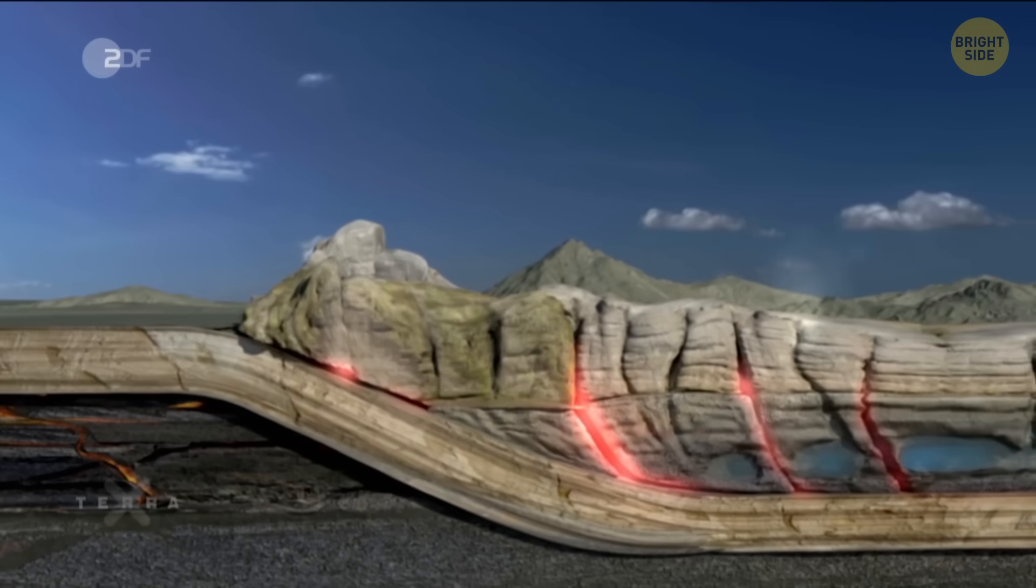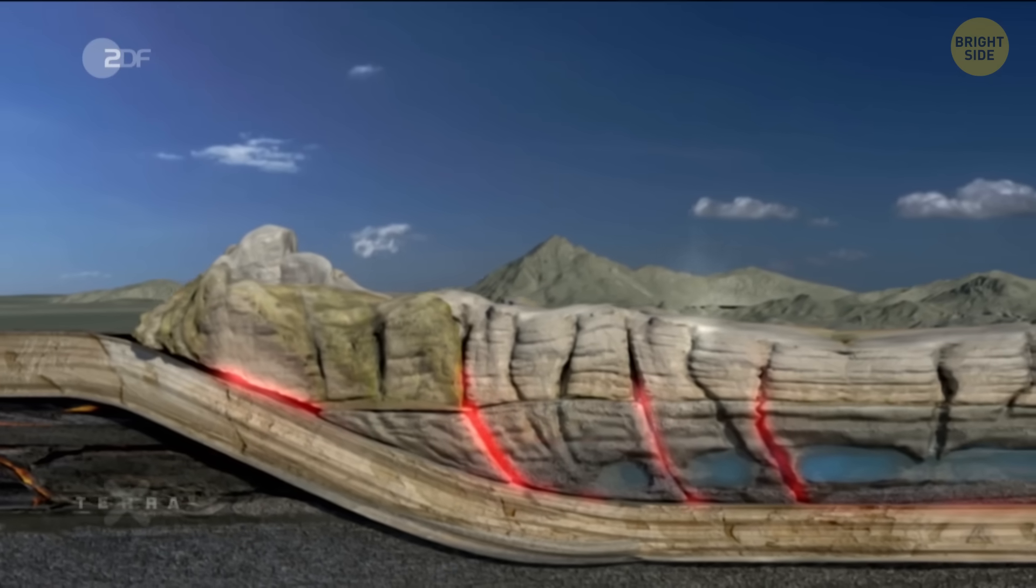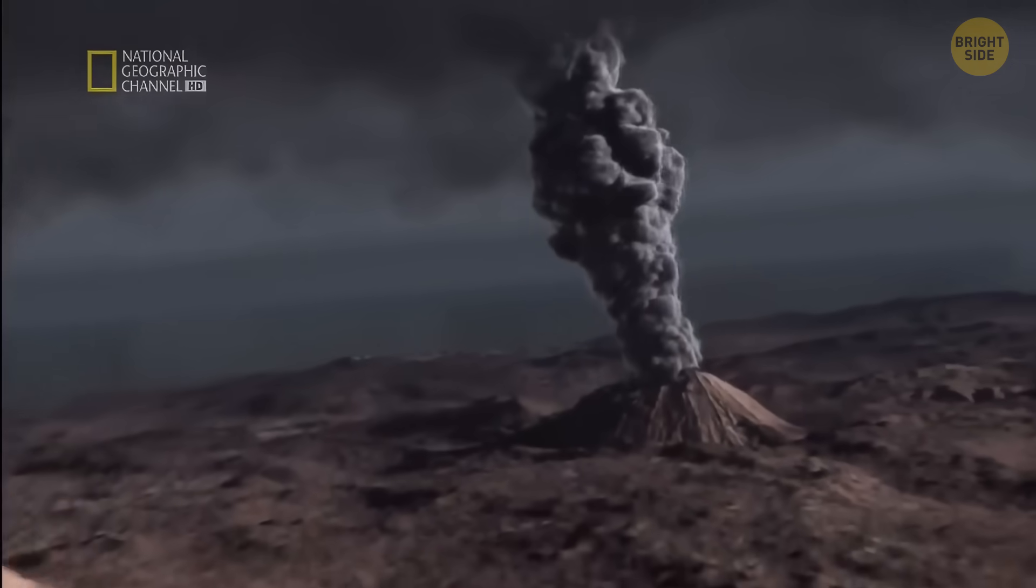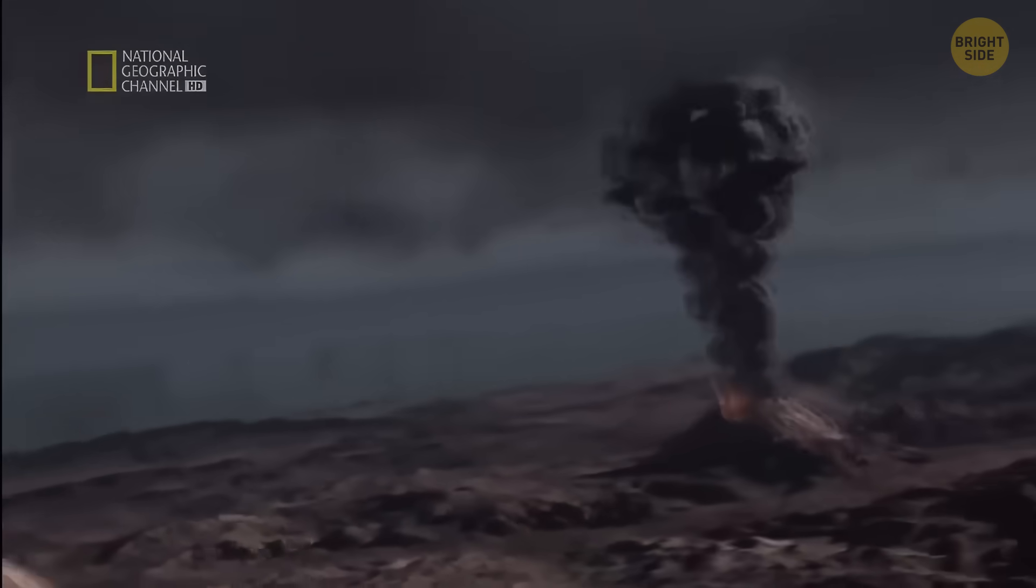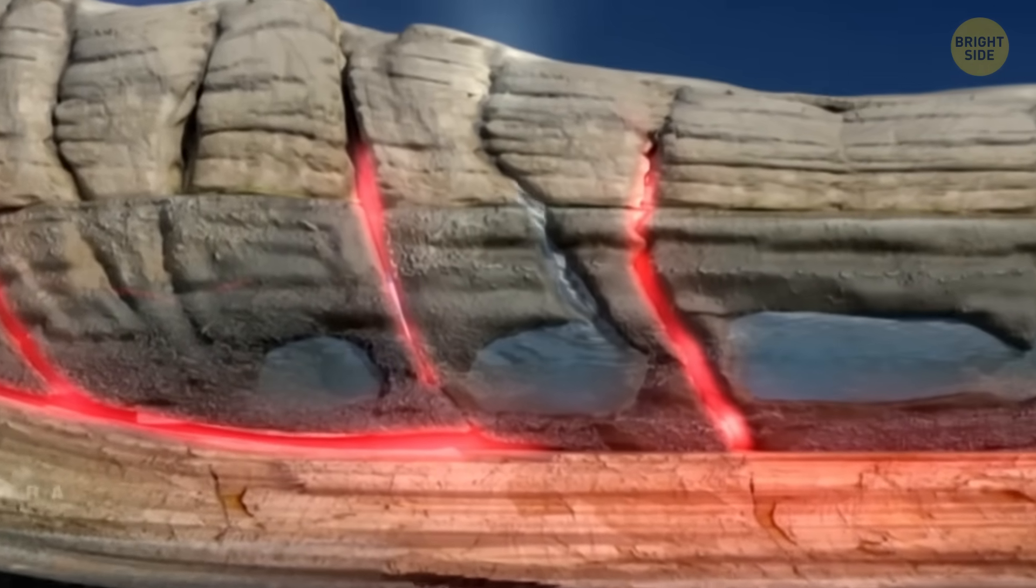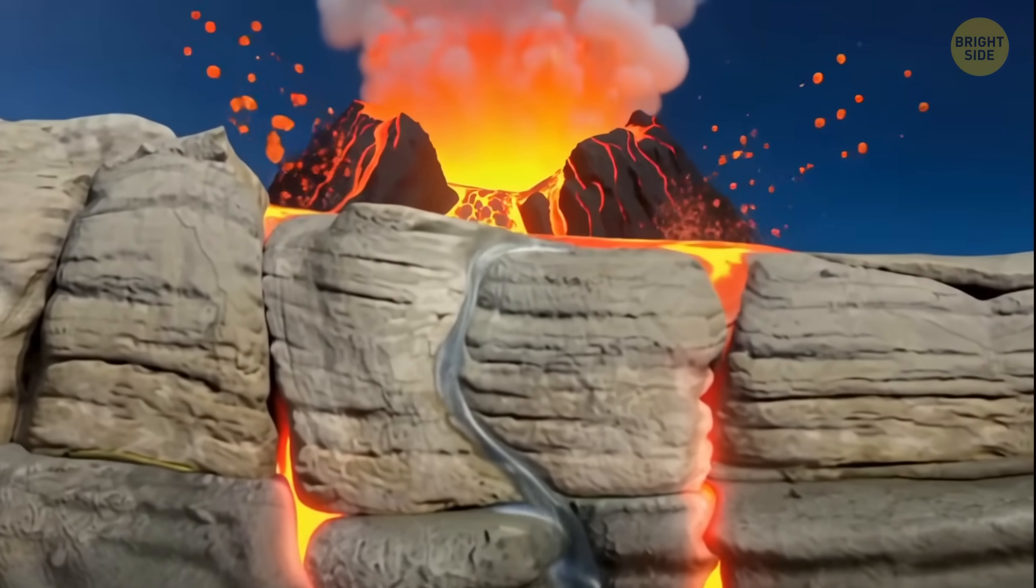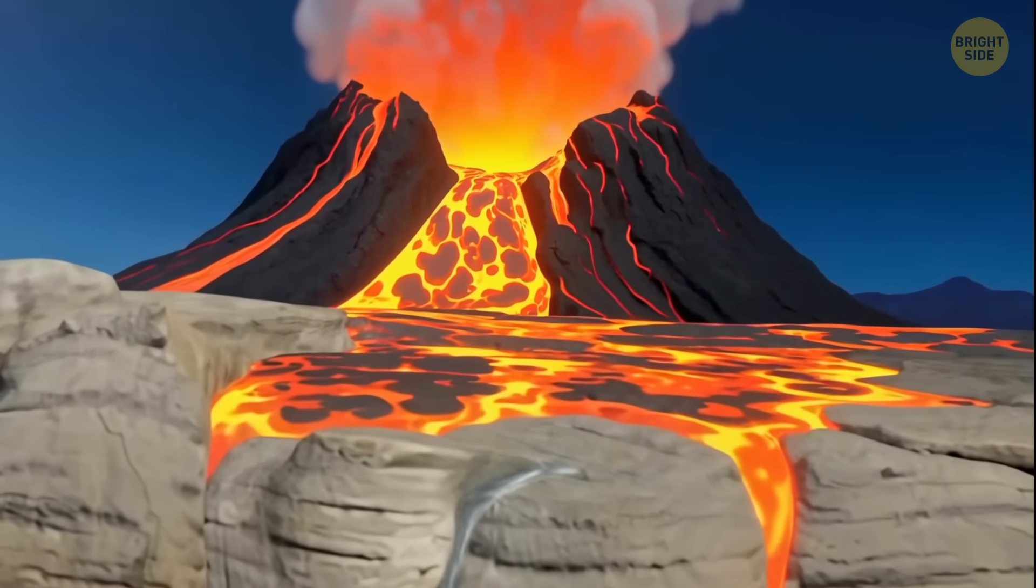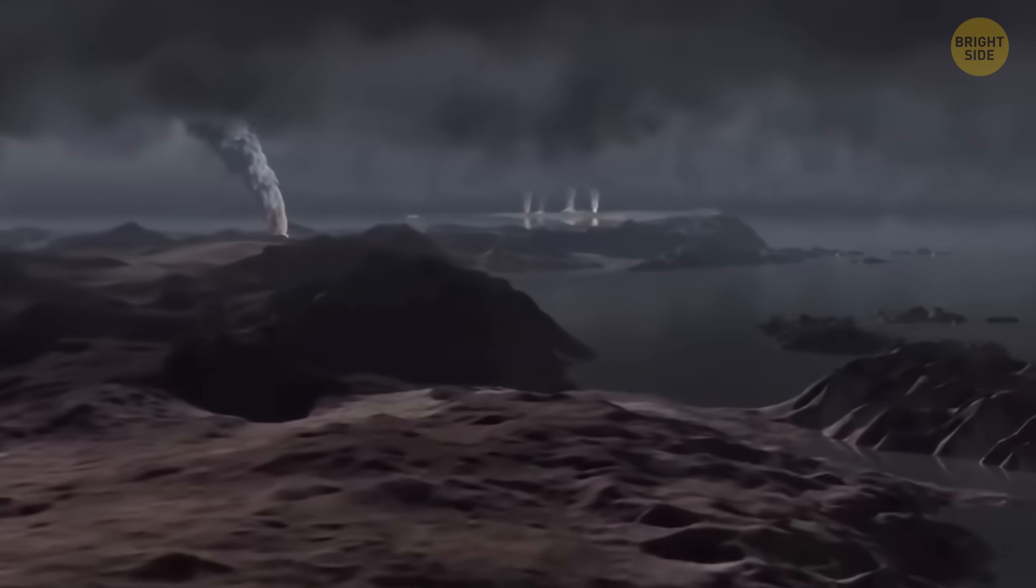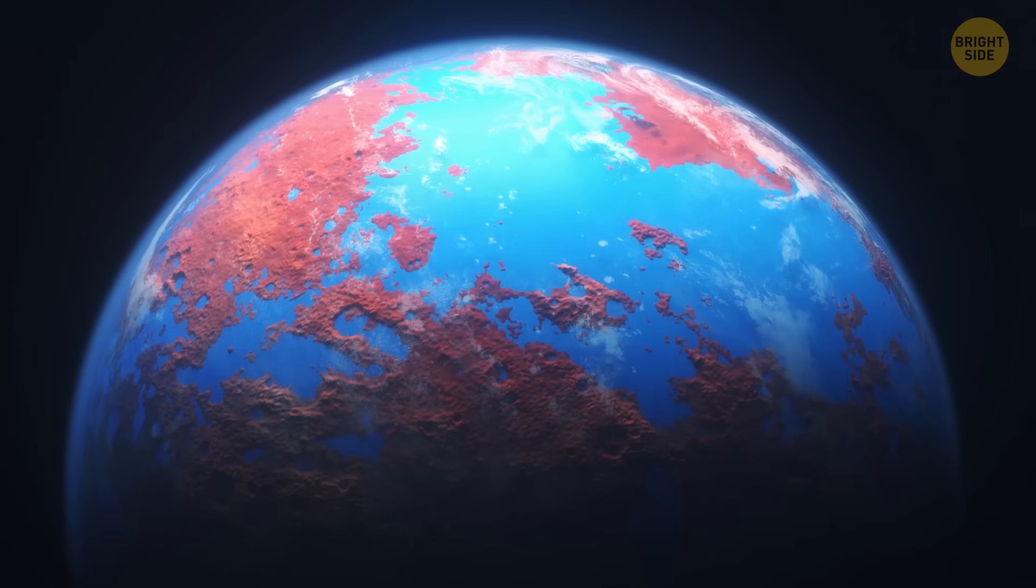At the same time, subduction zones—places where one tectonic plate slides under another—actually got shorter as the continents shifted around. This is important because subduction zones are where a lot of volcanoes come from. When one plate sinks under another, seawater gets dragged deep into the Earth. That water helps rocks melt, creating magma. The magma rises, erupts as volcanoes, and releases gases like carbon dioxide into the atmosphere. So when there were fewer subduction zones, there were fewer volcanoes, and less carbon dioxide was pumped into the air.